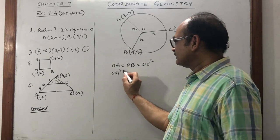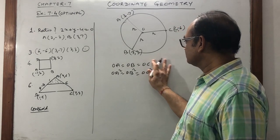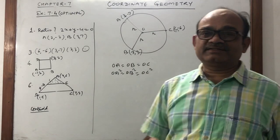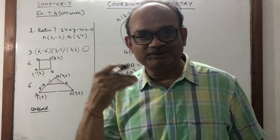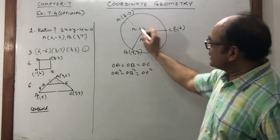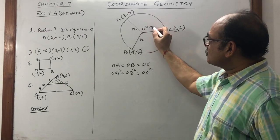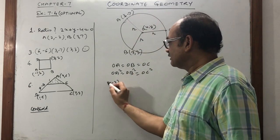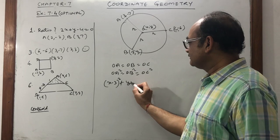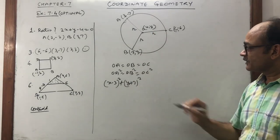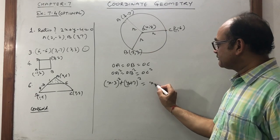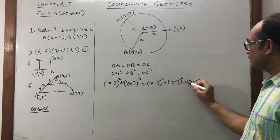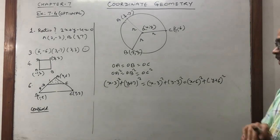We can say OA² equals OB² equals OC². OA, OB, OC are equal, hence their squares are equal. We square them because the distance formula involves a square root and we want to remove that. Suppose O is at point (x, y). Applying the distance formula: OA² is (x minus 3)² plus (y plus 7)², OB² is (x minus 3)² plus (y minus 3)², and OC² is (x minus 6)² plus (y plus 6)².